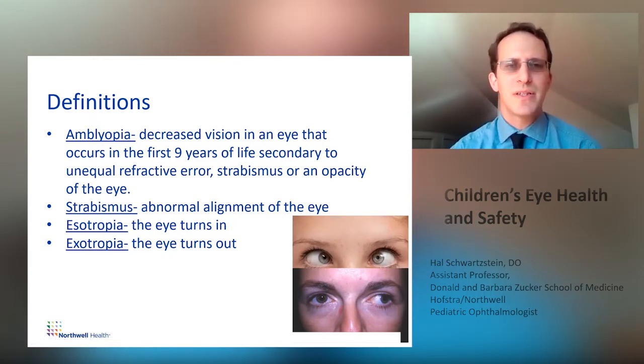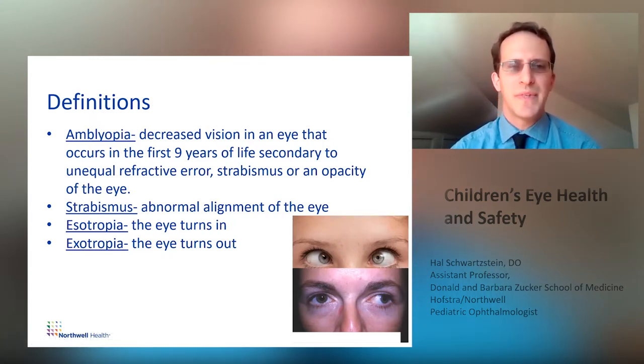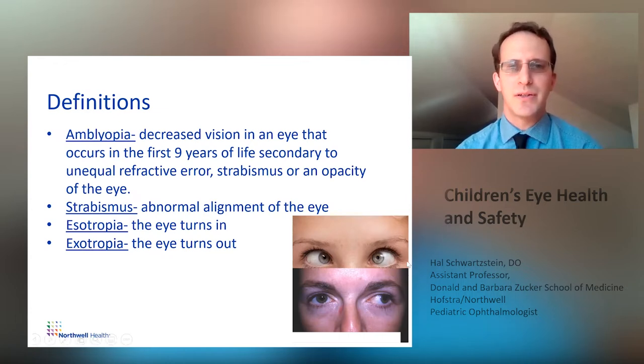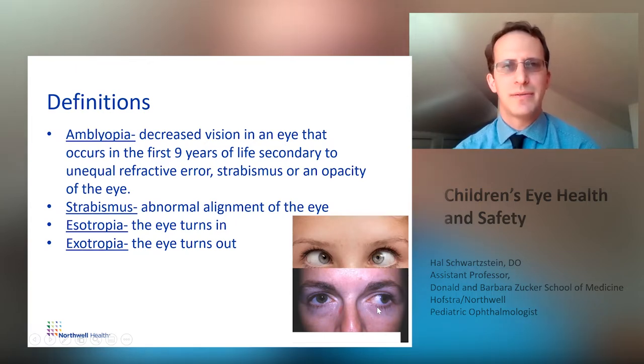Strabismus is an abnormal alignment of the eye. Esotropia is when the eye turns in, like this picture here, or exotropia, when the eye turns out, like this picture here.